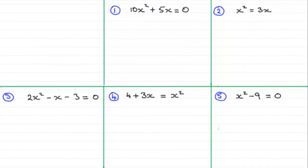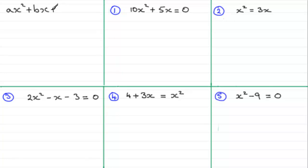Hi, welcome to this tutorial where I'm going to show you how we can solve quadratic equations by using factorization. A quadratic equation has the form: a constant, let's call it a, multiplied by x squared, plus another constant b multiplied by x, plus another constant c, and this equals zero. The constant a must never equal zero.